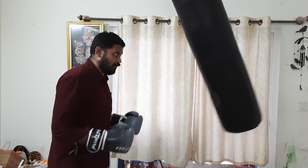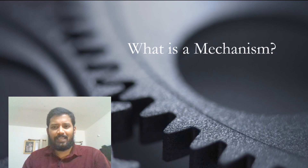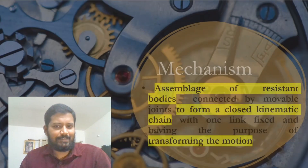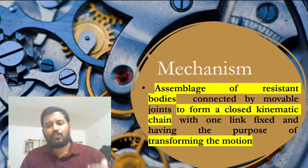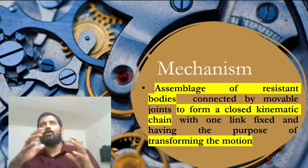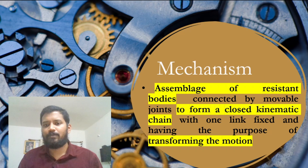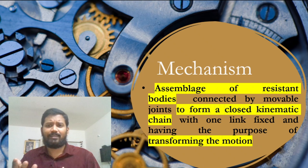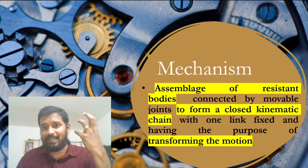Moving forward, what is a mechanism? I have seen people getting confused between mechanism and a machine, thinking they are the same. A mechanism by definition is an assemblage of resistant or rigid bodies connected by movable joints, which form a closed kinematic chain, with one link fixed, and which transforms motion. The purpose of a mechanism is transforming one type of motion into another — reciprocating motion into rotary, or rotary into reciprocating.